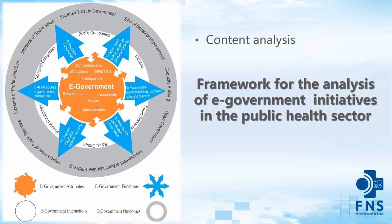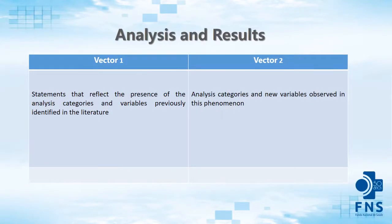To apply the framework to the collected data from the focus group, we defined two vectors. Vector 1 corresponds to statements that reflect the presence of the categories and variables previously identified in the literature to conduct the analysis, while Vector 2 groups the emergent analysis findings.